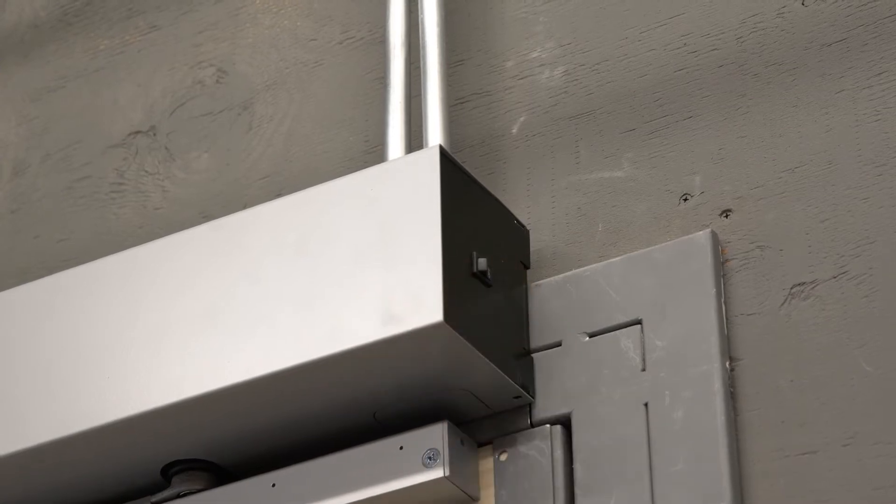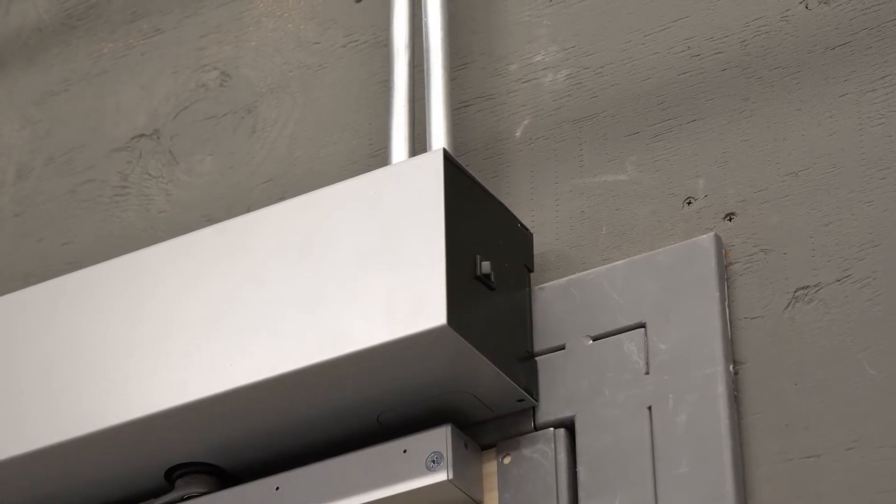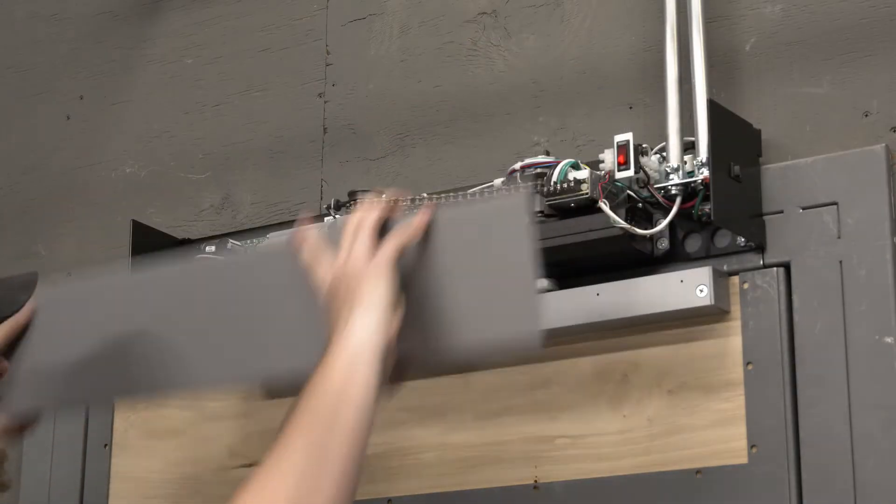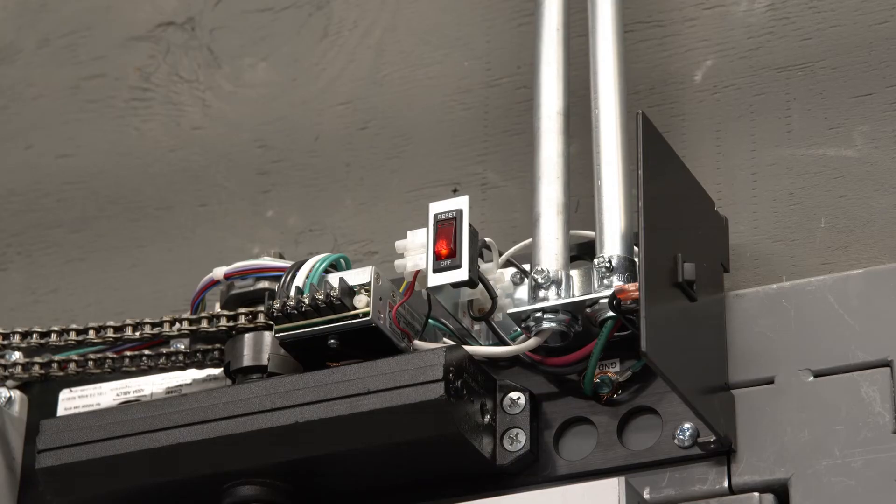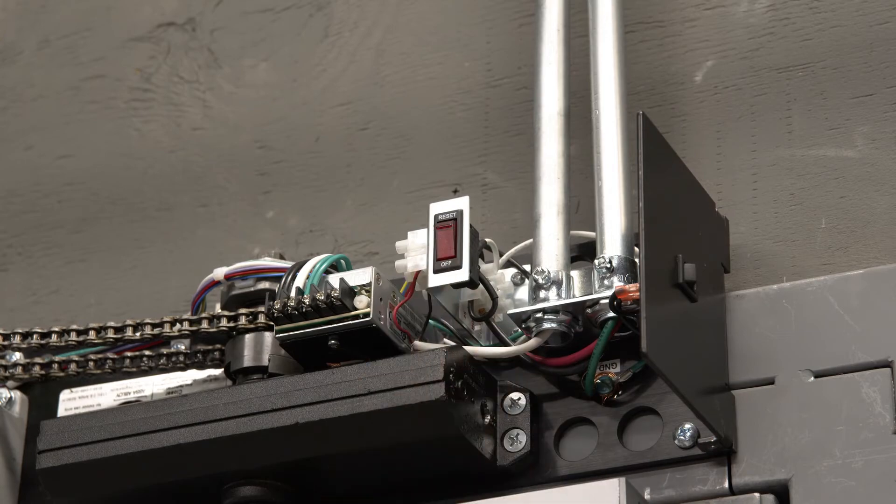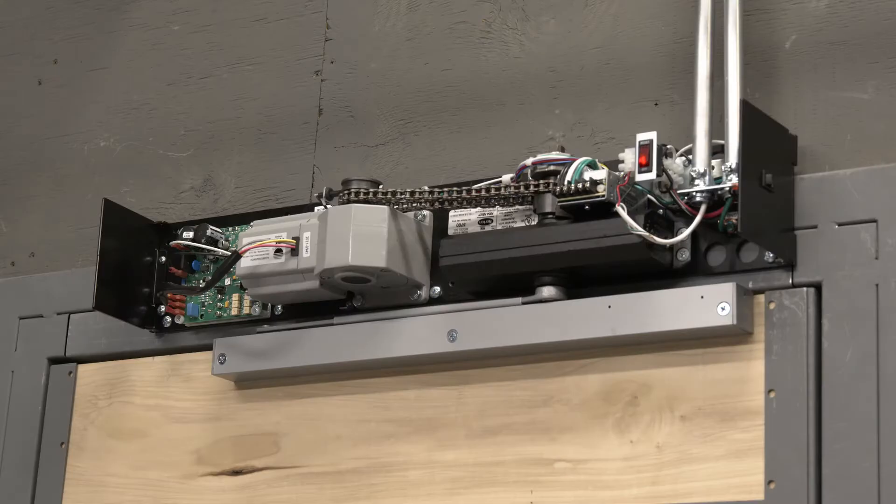To start, ensure the power switch is in the off position. Remove the cover from the operator and then turn the breaker inside the unit to the off position. For safety, make sure your external power is disconnected. Verify the high voltage power source before proceeding.